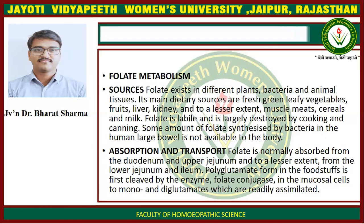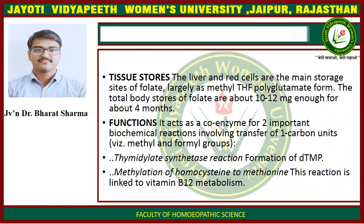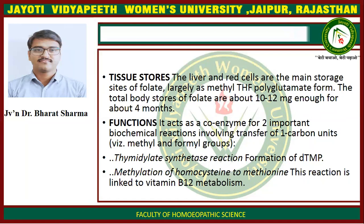The polyglutamate form in foodstuffs is first cleaved by the enzyme folate conjugase in the mucosal cell to mono- and diglutamate, which are readily assimilated. Tissue Stores: The liver and red cells are the main storage sites of folate, largely as methyl THF polyglutamate form. The total body stores of folate are about 10 to 12 mg, enough for about 4 months. Folate acts as a coenzyme for two important biochemical reactions involving transfer of one carbon unit.